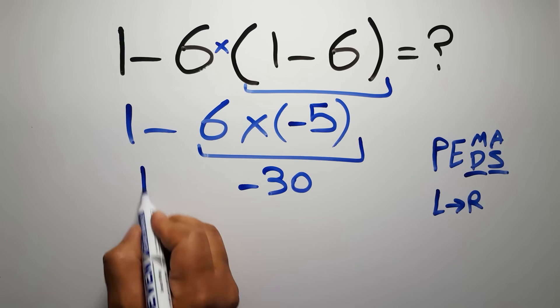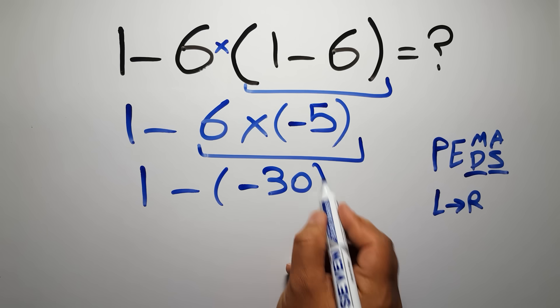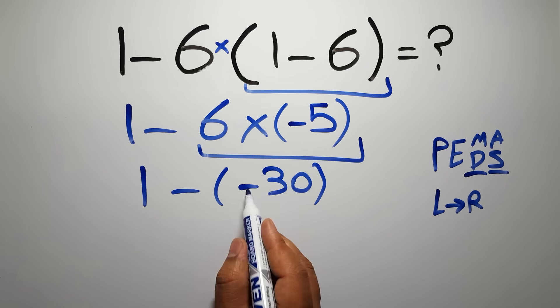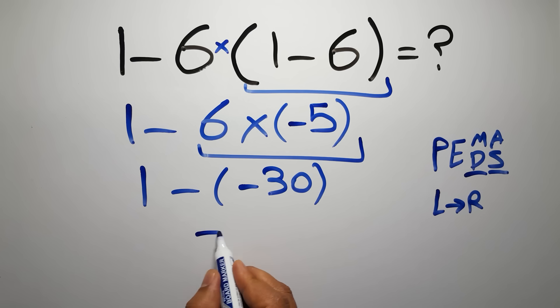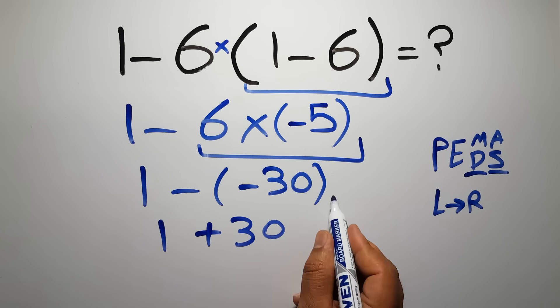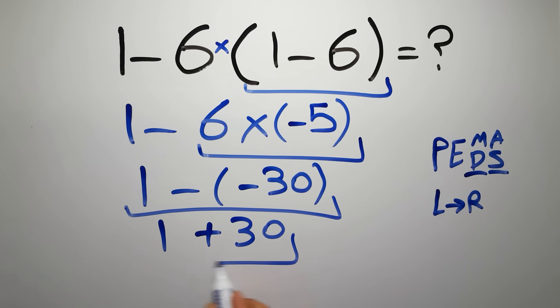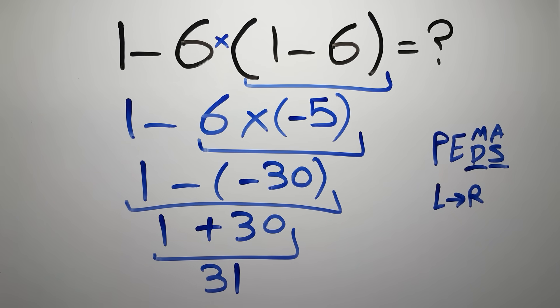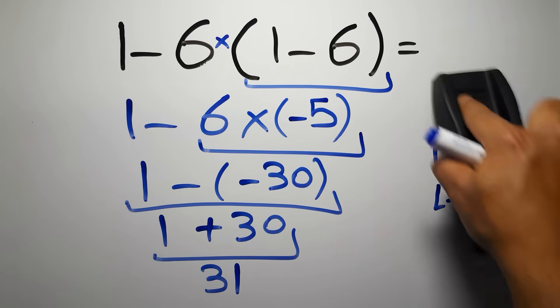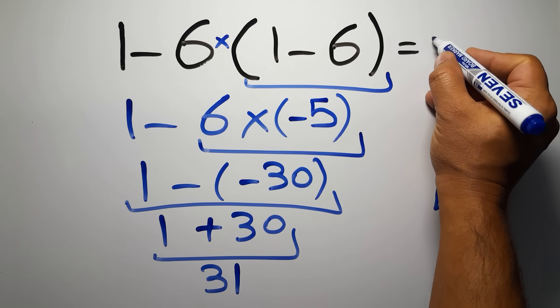So we have 1 minus negative 30. Negative times negative gives us positive, so 1 plus 30, which equals 31, and this is our final answer to this problem. The correct answer is 31.